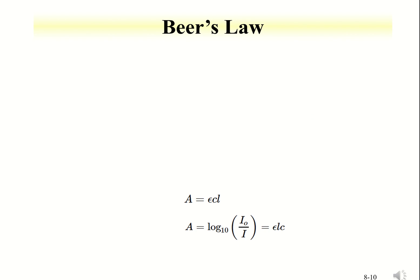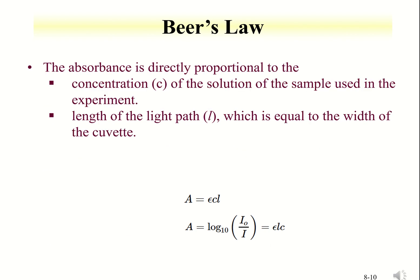Beer's law says that the absorbance of a compound is directly proportional to the concentration of the sample. It is also affected by the length of light path, which is equal to the width of the cuvette. Thus, the relationship can be established into a mathematical equation as shown.